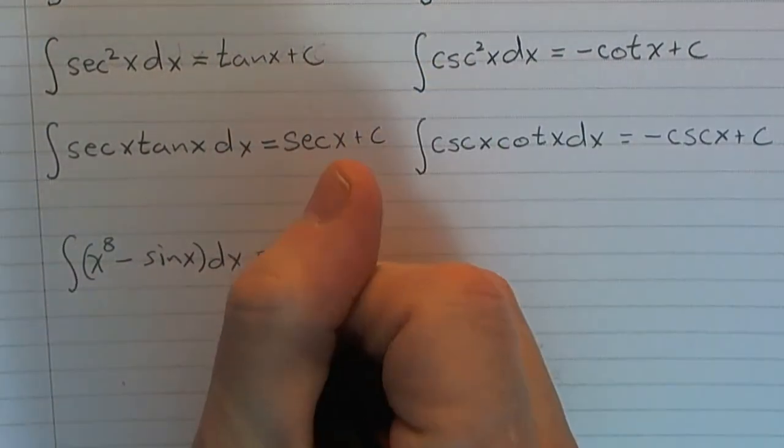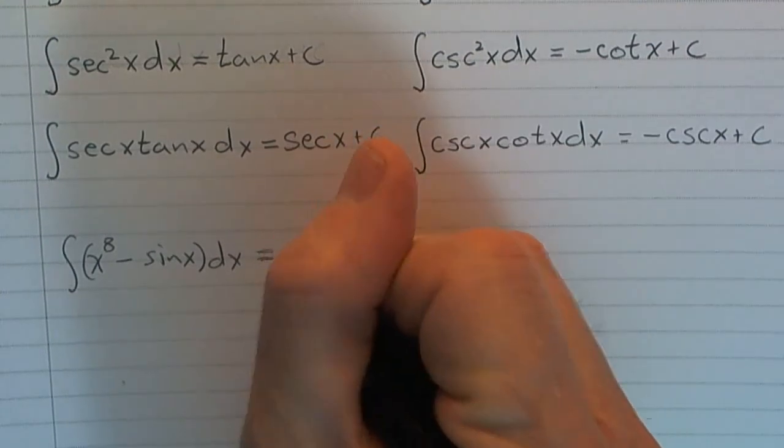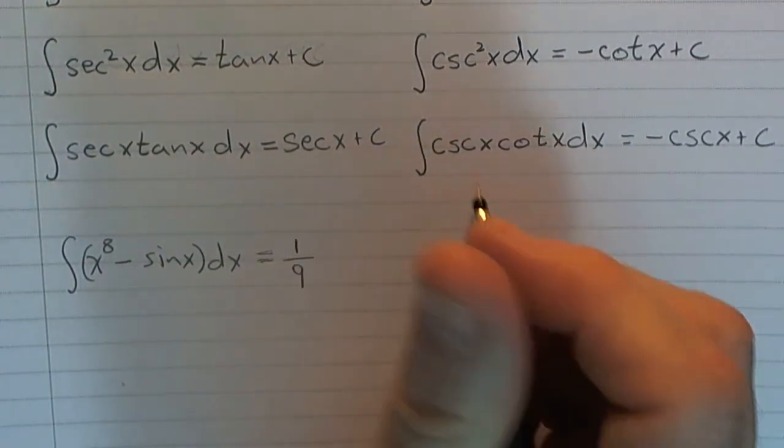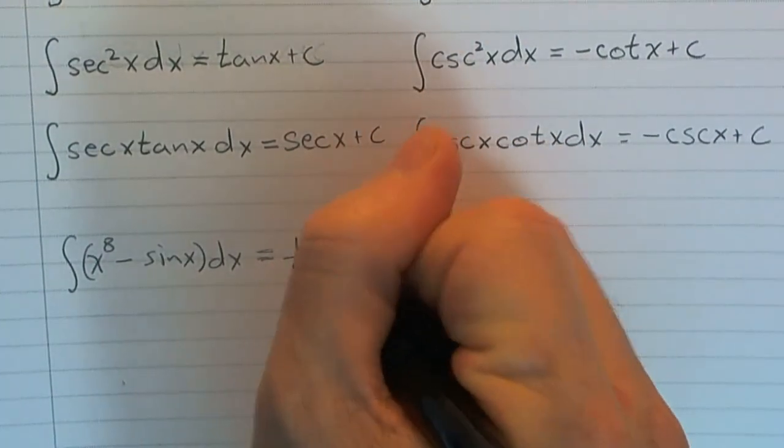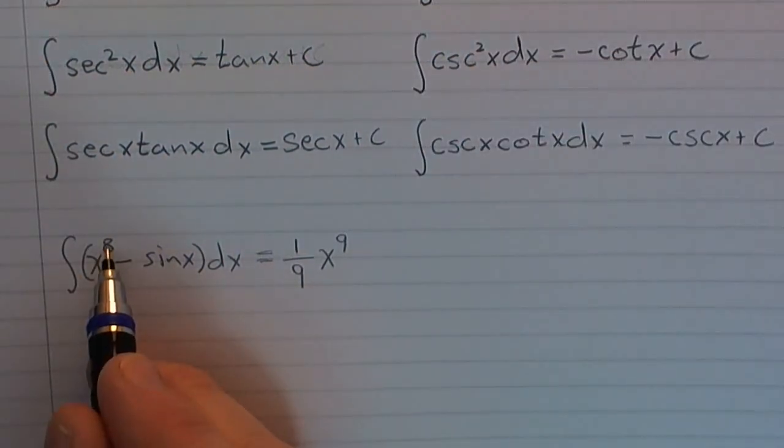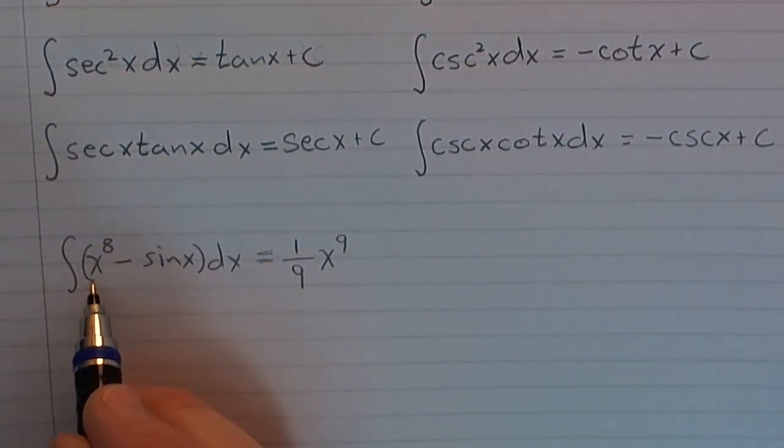Well, this first one, x to the eighth, that's just the power rule for integration. One ninth x to the ninth, right? Just using the power rule for integration. You add one to the eighth and divide by it.